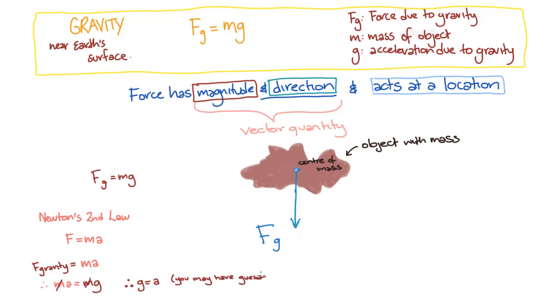This G is often known as little g by physicists to distinguish it from big G, which is the universal constant of gravitation that occurs in Newton's law of universal gravitation.